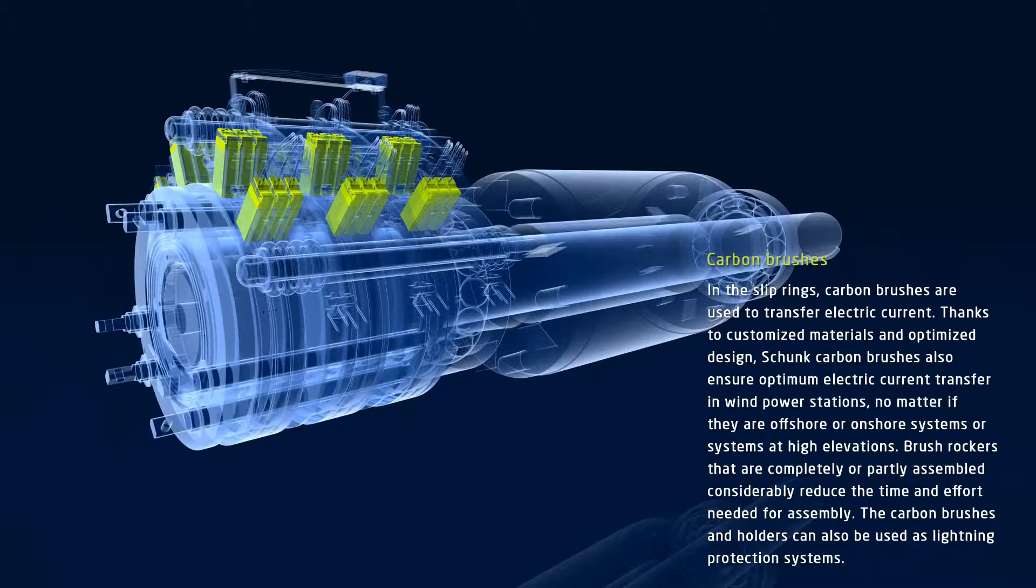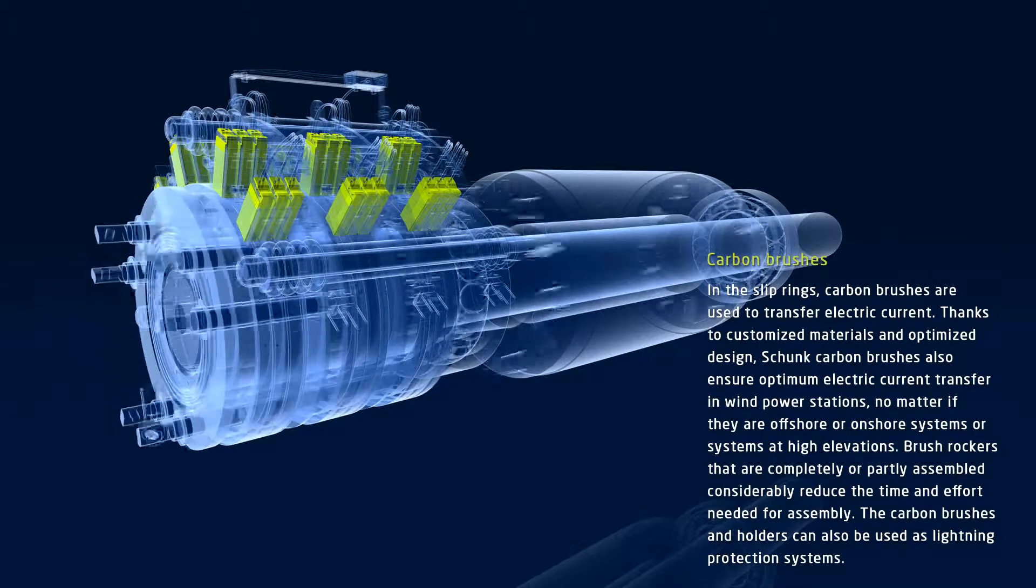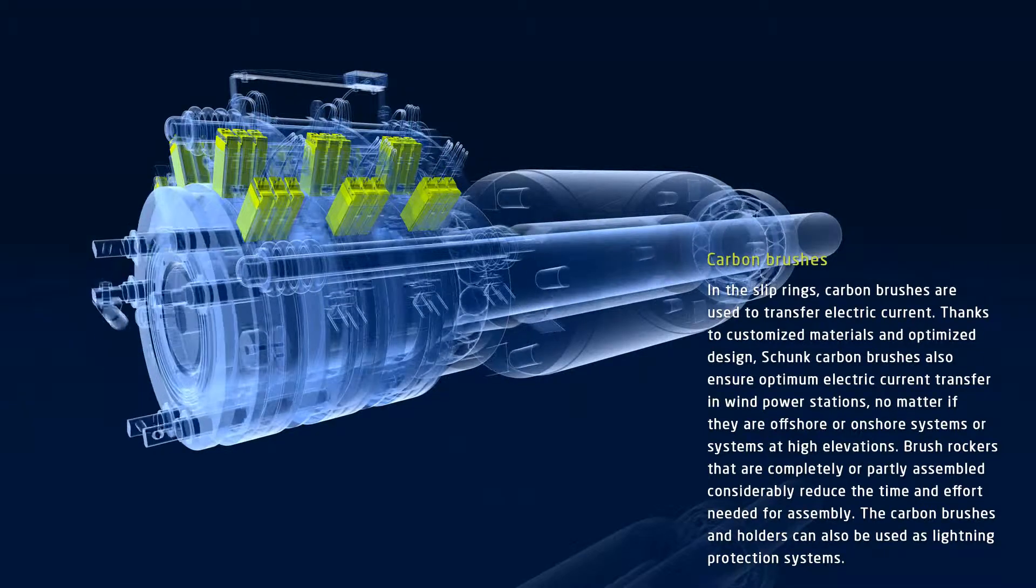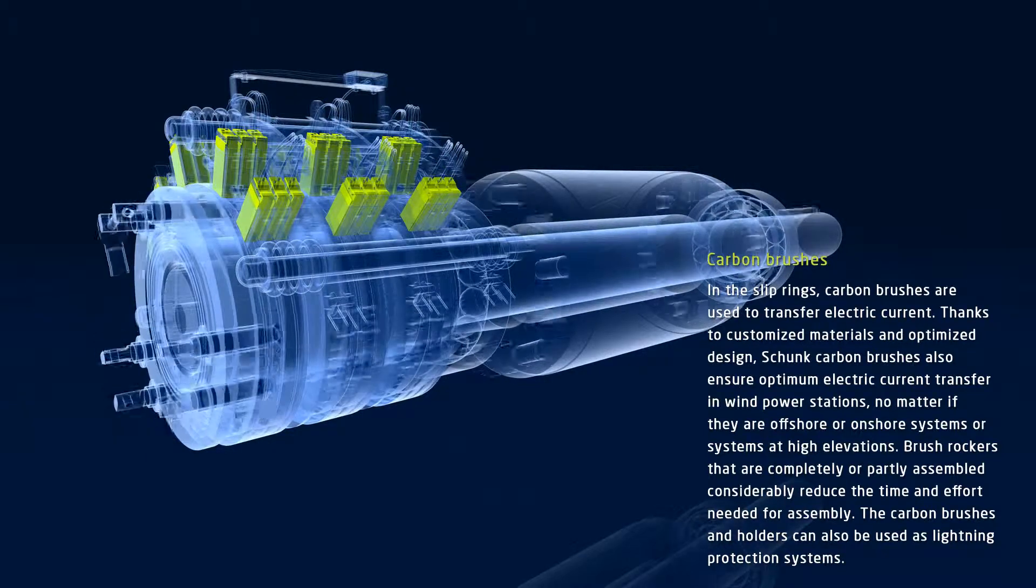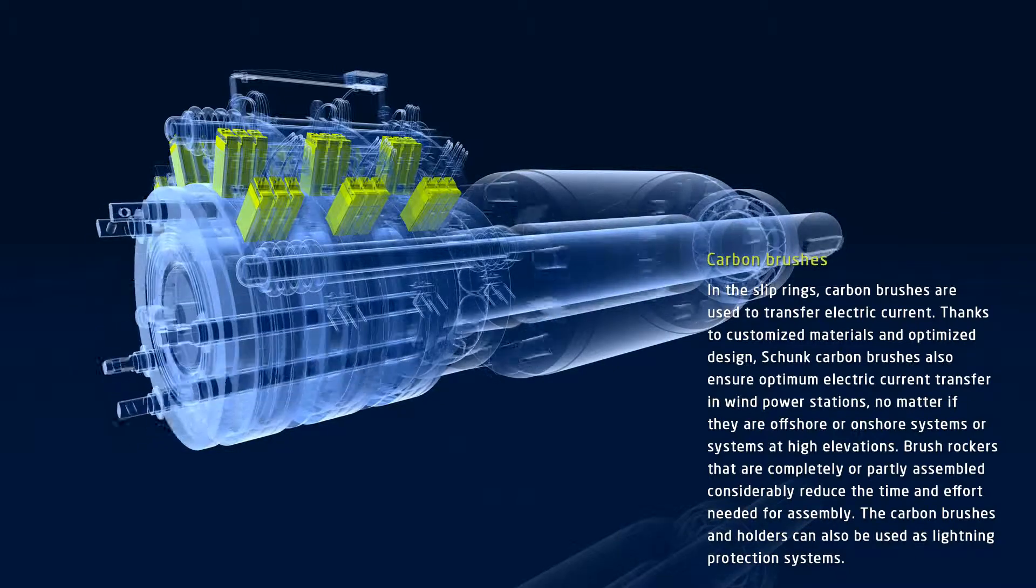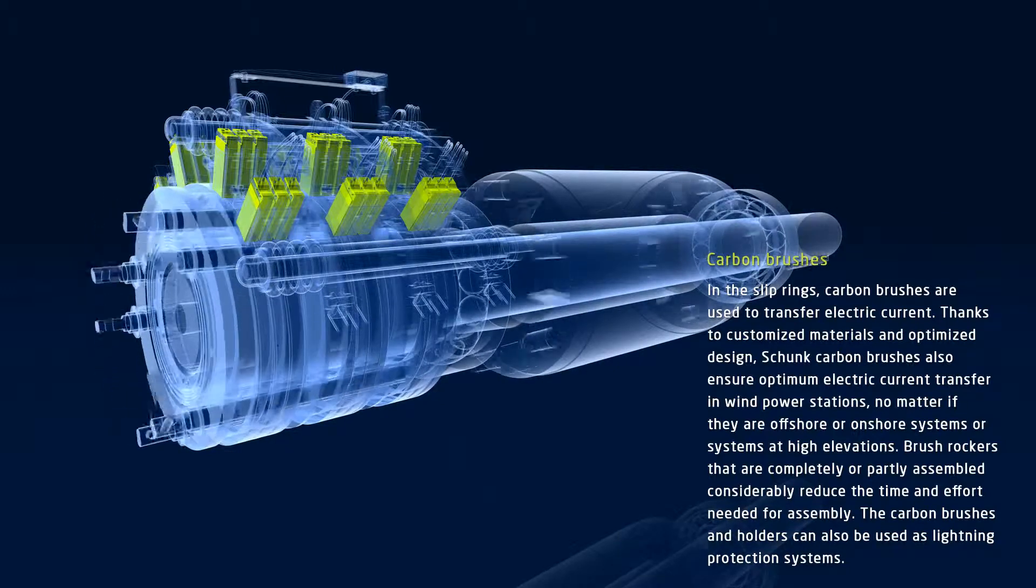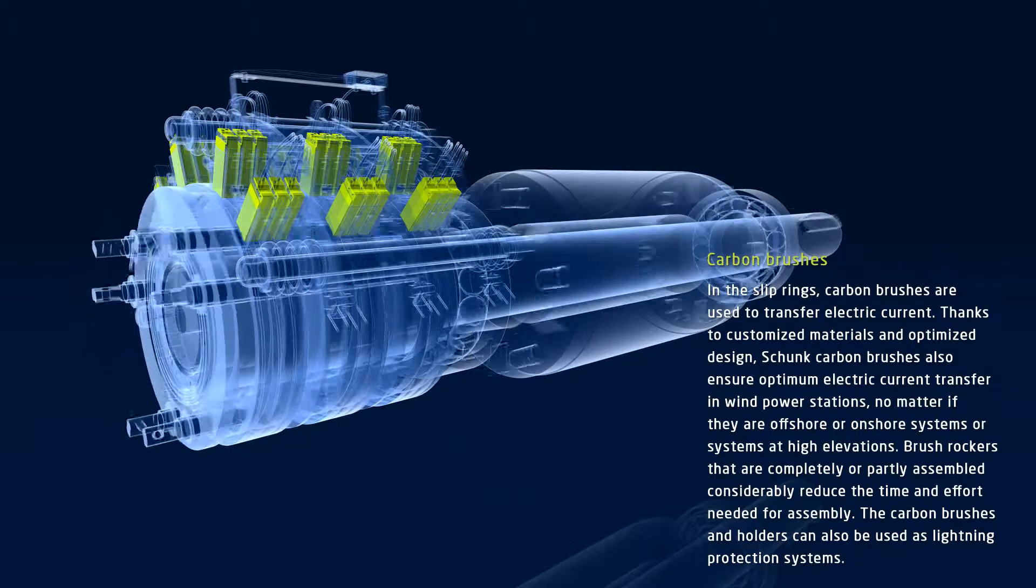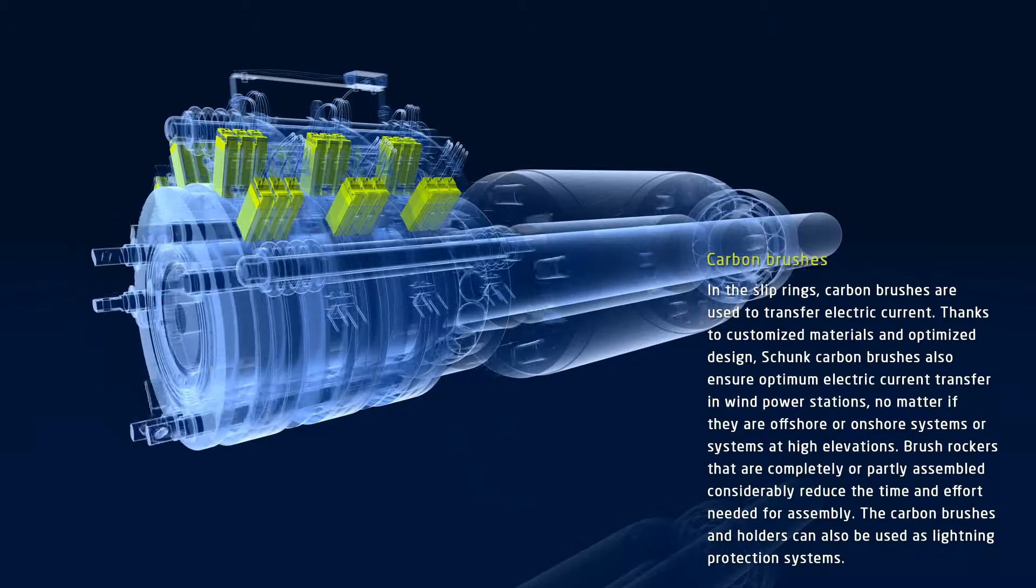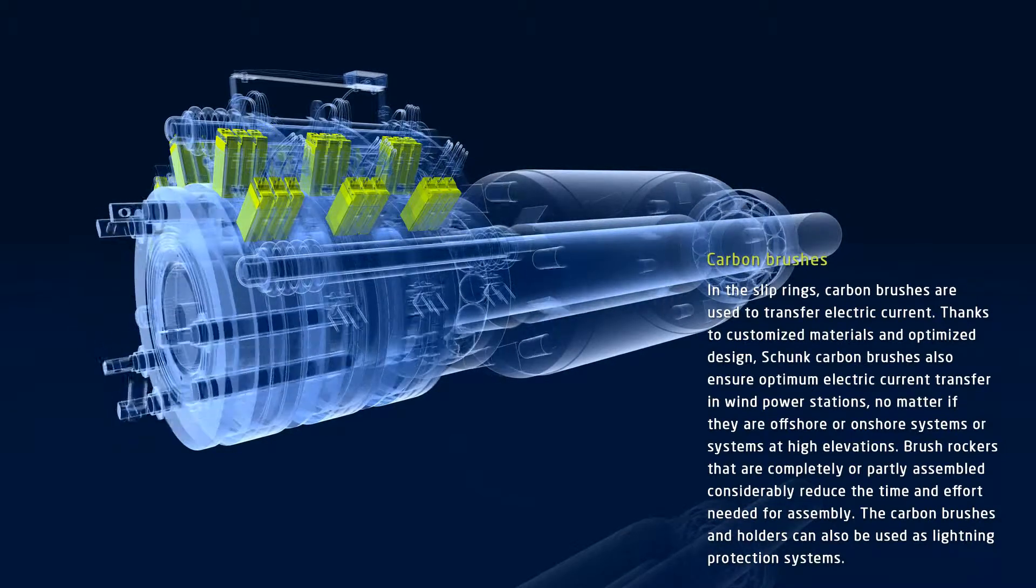Wherever electric current flows, Schunk carbon brushes are the solution. This applies for wind power stations too, no matter if they are offshore or onshore systems, or systems at high elevations. Thanks to customized materials and optimized design, Schunk carbon brushes and holders ensure optimum electric current transfer, not only in generators and electric motors, but also as lightning protection systems.